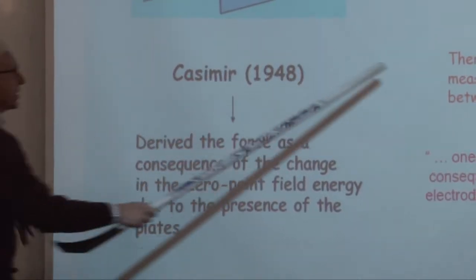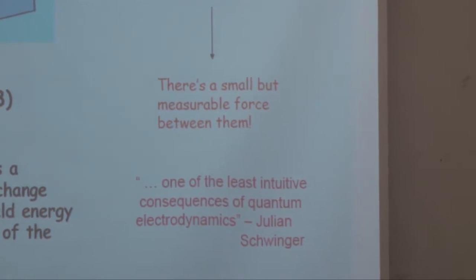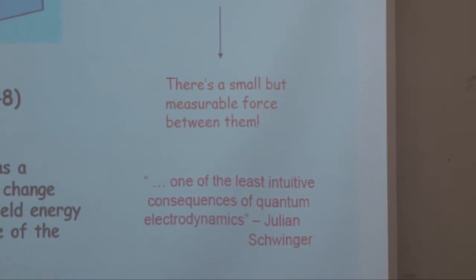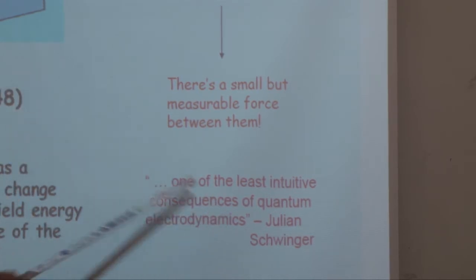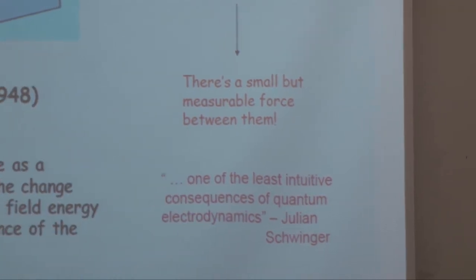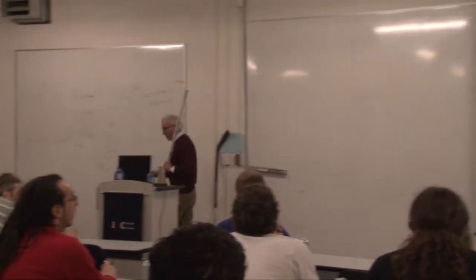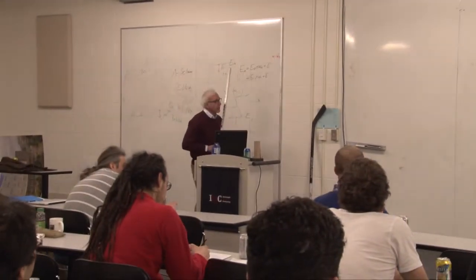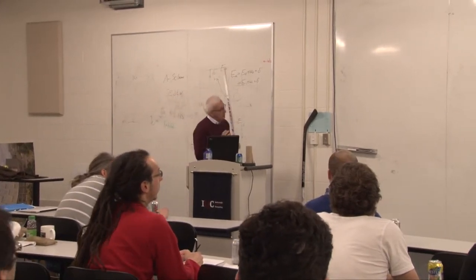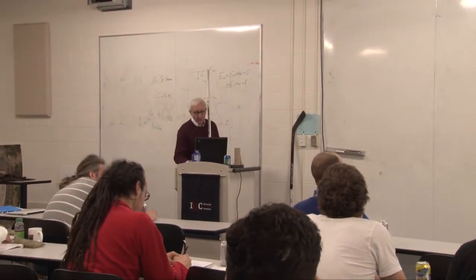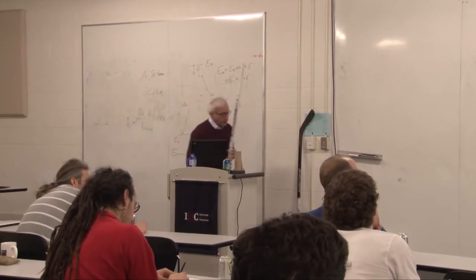It's a small but measurable force, and it caused a lot of consternation among very good physicists. Julian Schwinger called it one of the least intuitive consequences of quantum electrodynamics, and spent the last five or six years of his career writing papers on the Casimir effect, trying to understand it without zero-point energy.